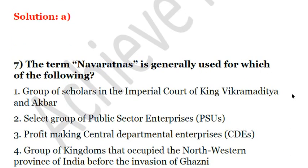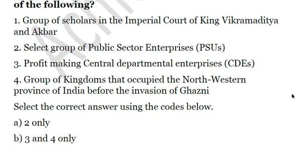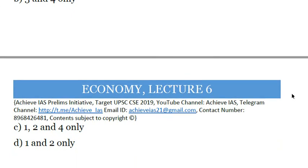Next question: the term Navratnas is generally used for which of the following? First, group of scholars in the imperial court of King Vikramaditya and Akbar. Second, select group of public sector enterprises. Third, profit-making central departmental enterprises. Fourth, group of kingdoms that occupied the northwestern province of India before the invasion of Ghazni. Only two statements are correct — first and second. Navratnas were nine scholars in the court of Vikramaditya and Mughal Emperor Akbar. Also, public sector enterprises are categorized as Navratnas based on certain criteria. The answer is one and two only, so the answer is D.